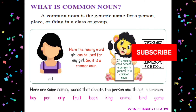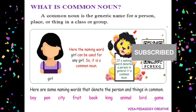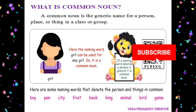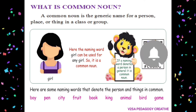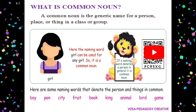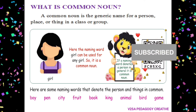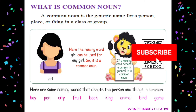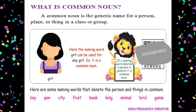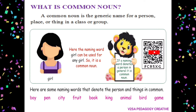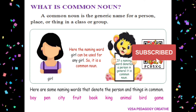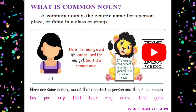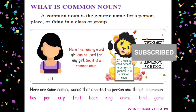Here we have a picture. It is a girl. Girl is the name of a girl — the name of a person. For examples: boy, pen, city, fruit, book, king, animal, bird, game.